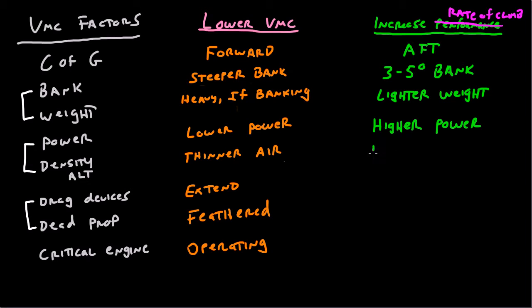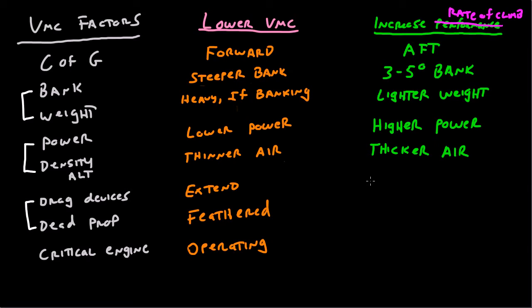Same thing with density altitude — thicker air. Well, if the air is thicker, if the air is more dense, then the wings are going to work better, the engine is going to work better, the propeller is going to work better. Essentially, they all have more air for the aerodynamic surfaces to act on, which means you're going to get more thrust, more lift, and your rate of climb is going to be better. So thicker, more dense air is better for rate of climb.